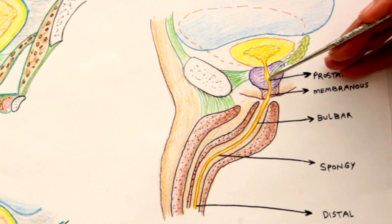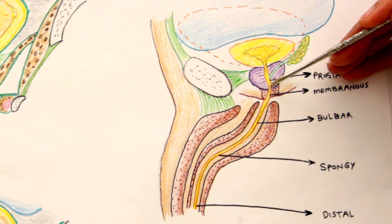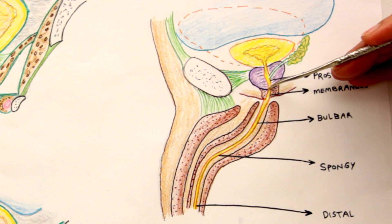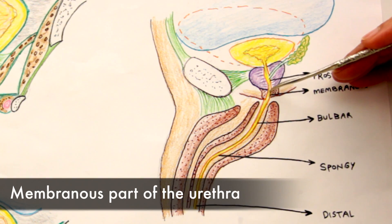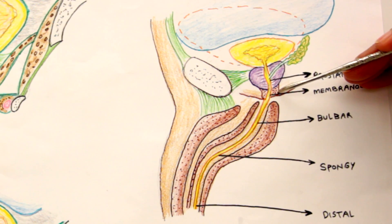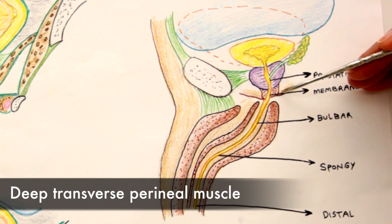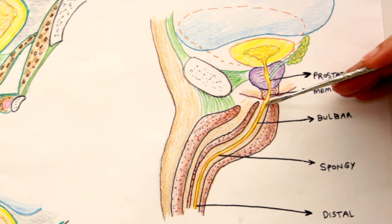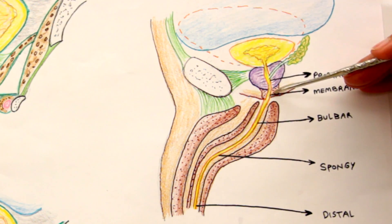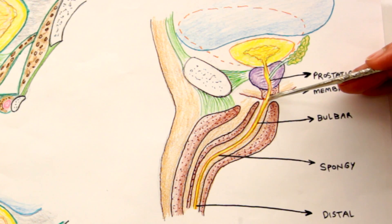Then comes the urethra passing through the perineal region, the perineal membrane. That part is known as the membranous part of the urethra—it's the narrowest part. You can see over here it's surrounded by the transverse perineal muscles, the deep transverse perineal muscles. Then it emerges out of the perineal membrane, or the UG diaphragm, urogenital diaphragm, and enters the bulb of the penis.